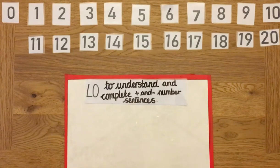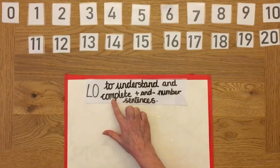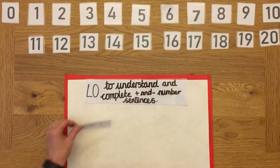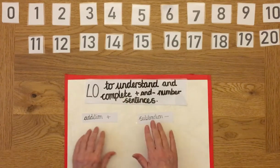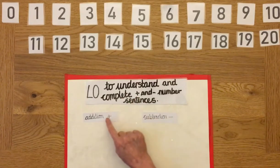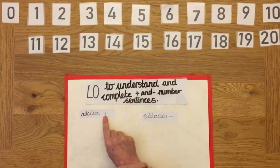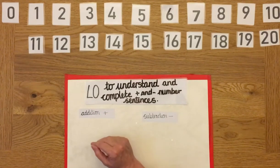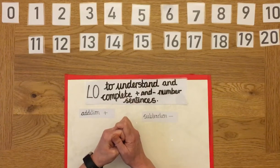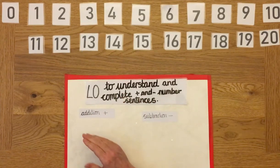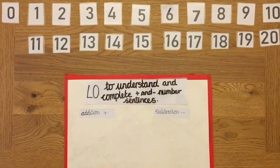Brilliant! So good at that. It's important that we know how to count forwards and backwards for today's topic. We are going to understand and complete plus and take away number sentences — addition and subtraction. There are other words for these: plus, adding, addition, take away, subtraction. When we're adding, we're putting more, combining two groups. When we're doing subtraction — take away — we'll have less; the answer will be less.